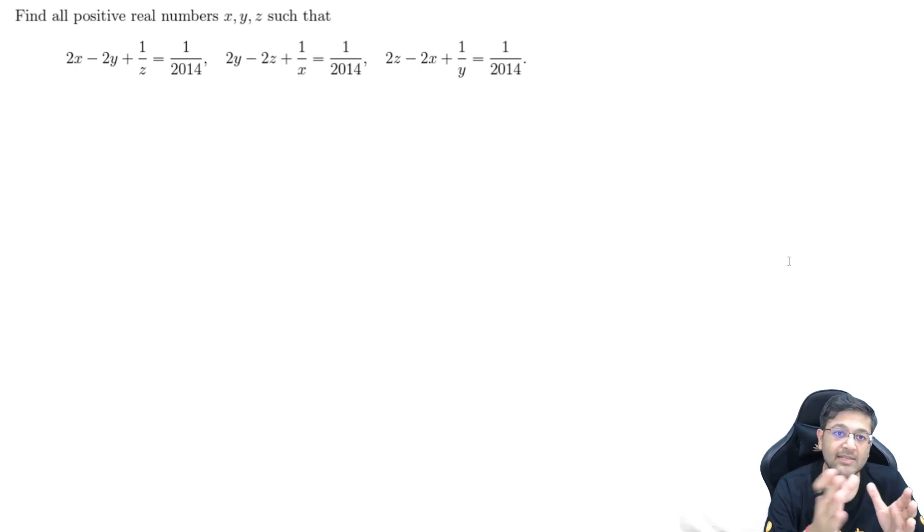So x, y, z ke liya, we have positive real numbers x, y, z, so that these three equations are satisfied. One thing that we can observe here is, these are quite in symmetric or you can say cyclic order. So let us add these three equations. Add karo ke toh guys, kya hoga? 2x, 2x will get cancelled. 2y, 2y will get cancelled. 2z and 2z will get cancelled.